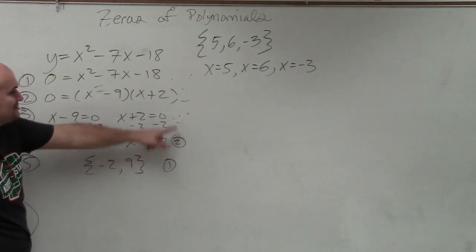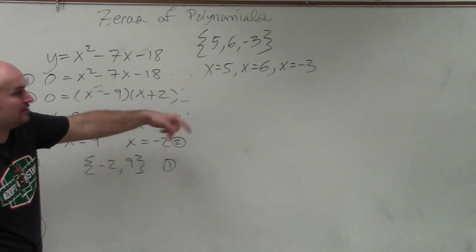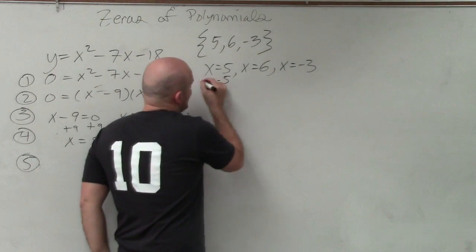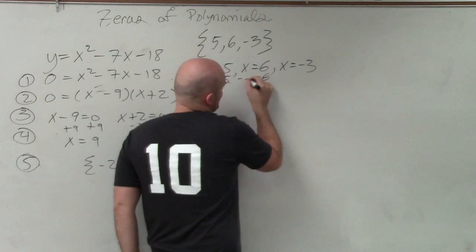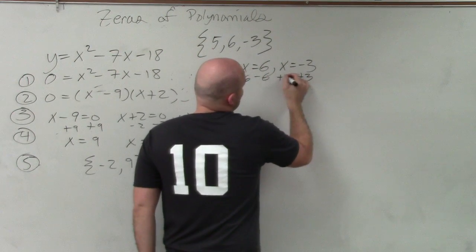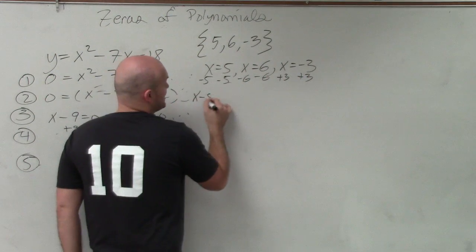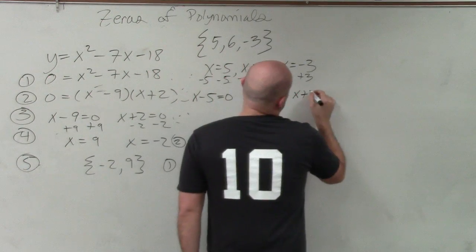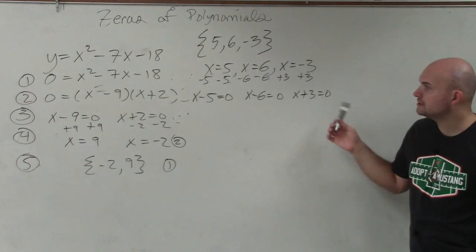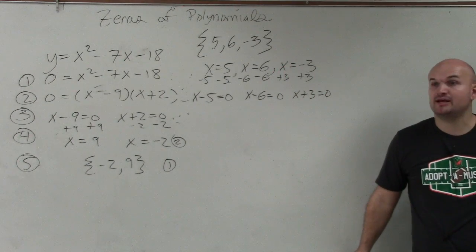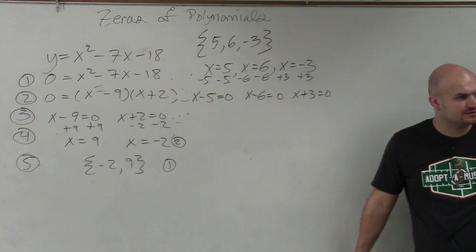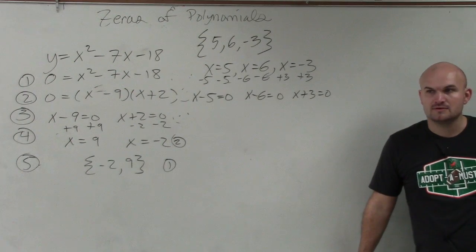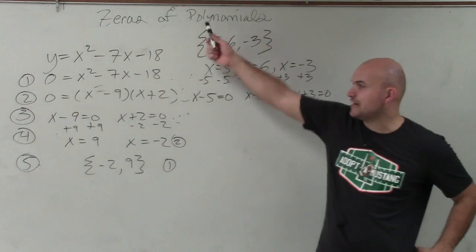Then to go from step 2 to step 3, you set them all equal to 0. You'd want to write this down. So I subtract 5 on both sides, subtract 6 on both sides, and add a 3 on both sides. So therefore, I have x minus 5 equals 0, x minus 6 equals 0, and x plus 3 equals 0. Does everybody see what I did? Anybody have any questions? Please raise your hand if you have a question, or if you don't understand. I'm just doing this process backwards.